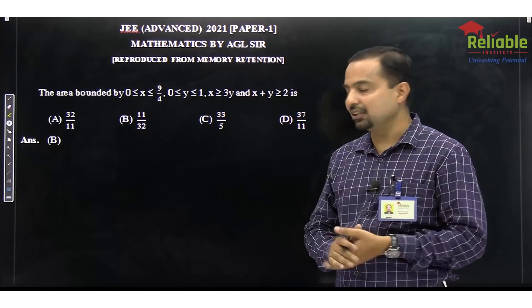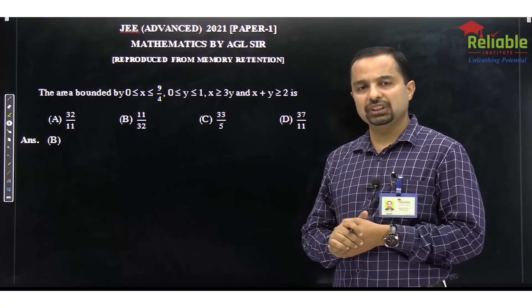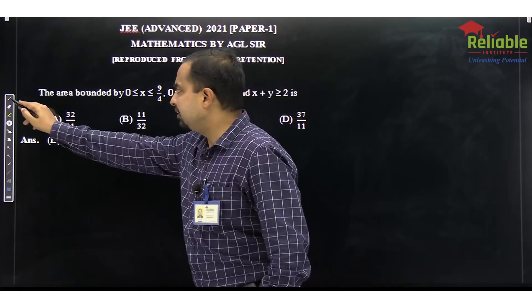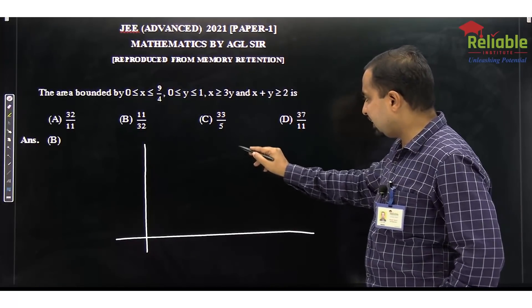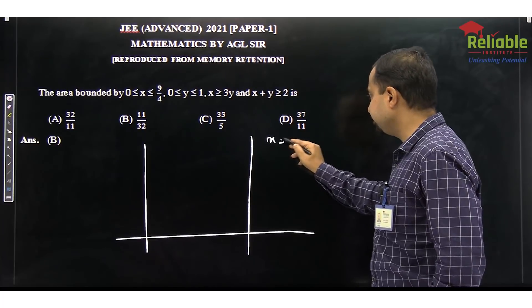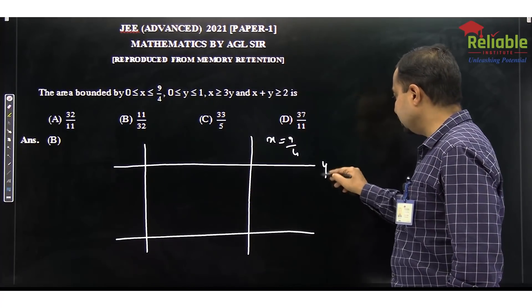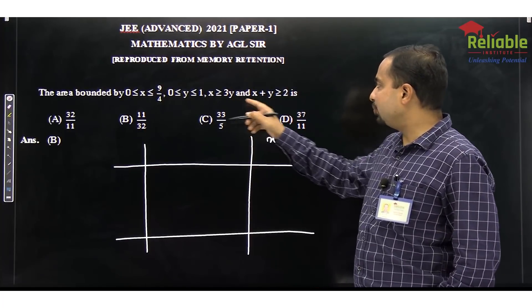The first question was area under the curve. You had 4 linear inequalities and asked the area. The 4 linear inequalities were quite easy. I will plot it first. One line is x equals 9 by 4, so this is x equals 9 by 4. The other line is y equals 1.